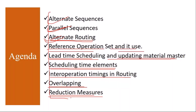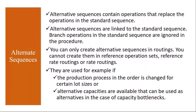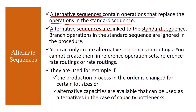First we'll start with alternate sequences. Alternate sequences contain operations that replace the operations in the standard sequence. Normally whenever we create a routing, it is considered as a standard sequence — standard sequence is your operations. But sometimes due to some process industry requirements, those operations will be performed in a different way, in a different sequence. That is called an alternate sequence. Whenever you create a routing, it first creates a standard sequence by default, then you create the alternate sequence and link it to the standard sequence.